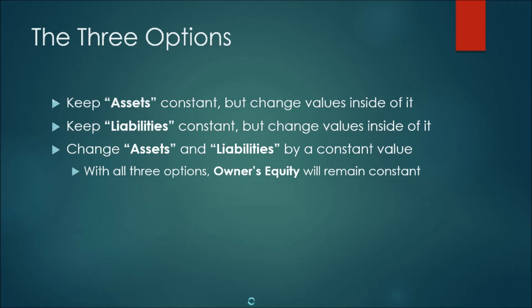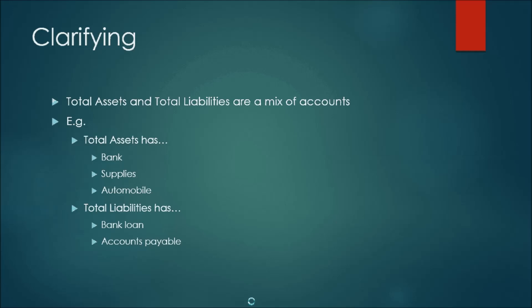To clarify: assets is not just one account, and total liabilities is not just one account. Total assets has a bank account, a supplies account, maybe an automobile account, a cash account — these are all different accounts that add up to create the total assets. Similarly, total liabilities has a bank loan and accounts payable — separate accounts that add up to create the total liabilities.